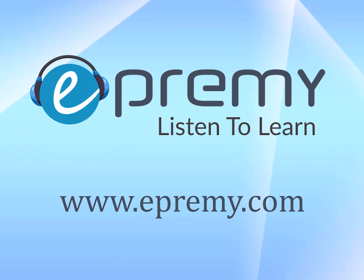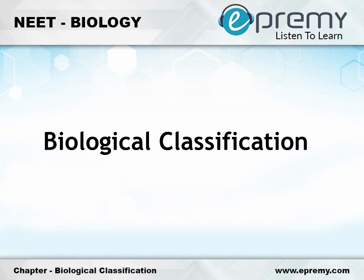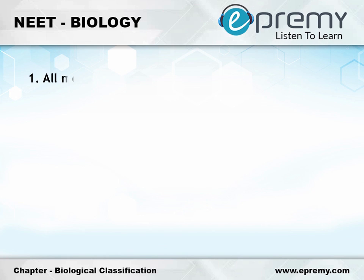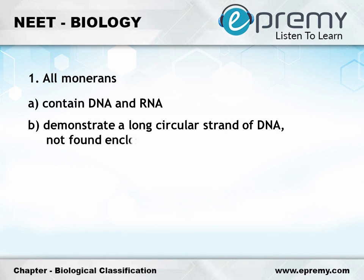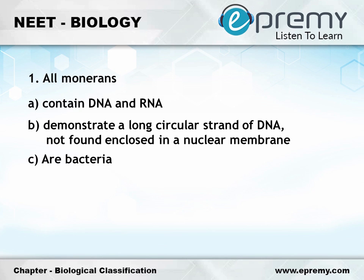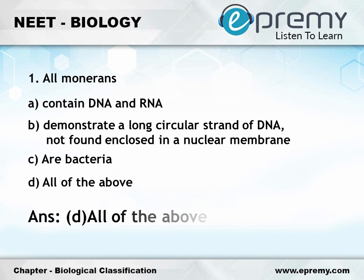This is brought to you by ePremie.com. Multiple choice questions in biological classification. Question number 1: All Monerans — Option A: contains DNA and RNA; Option B: demonstrate a long circular strand of DNA not enclosed in a nuclear membrane; Option C: are bacteria; Option D: all of the above. The answer is Option D, all of the above.